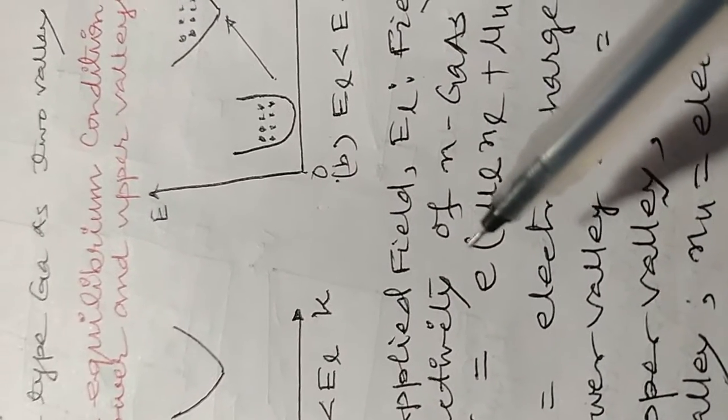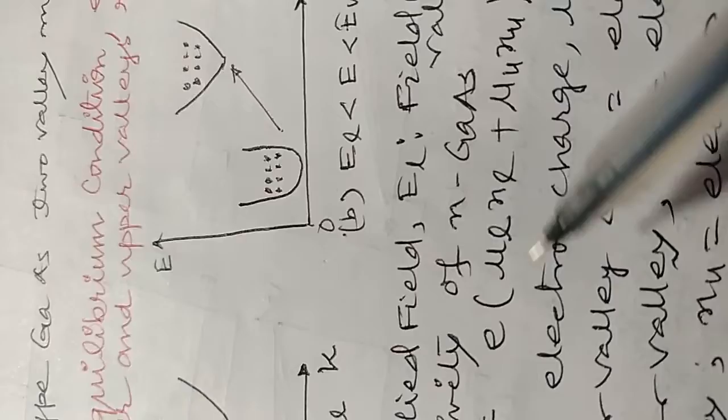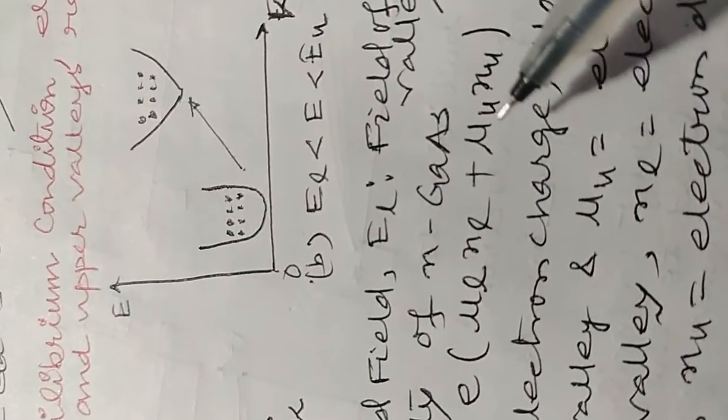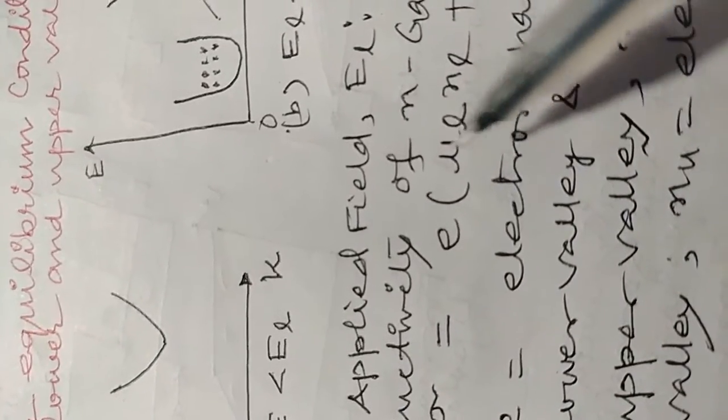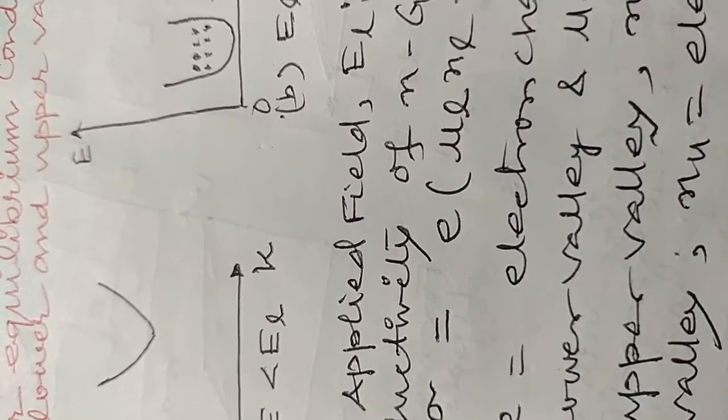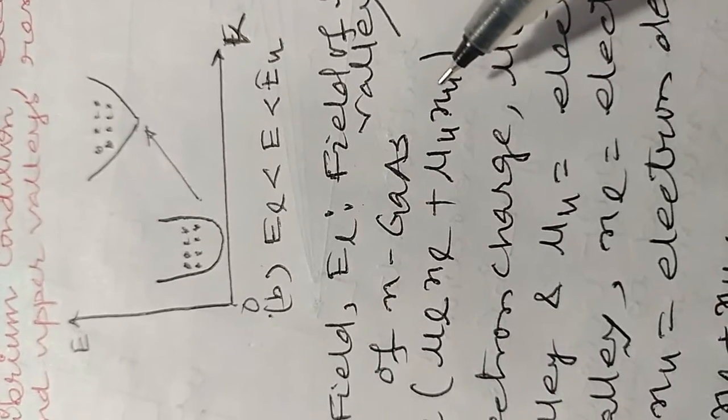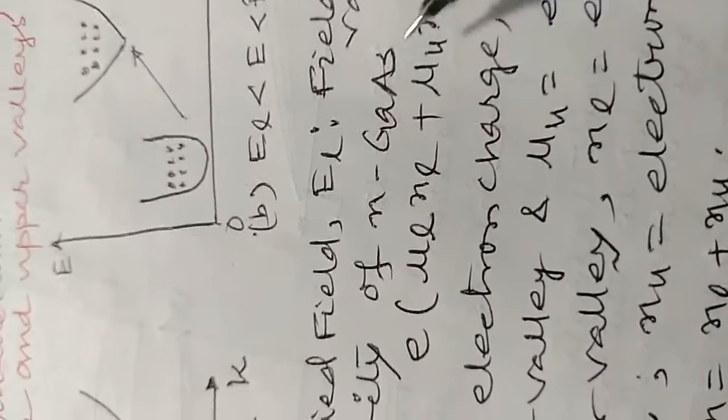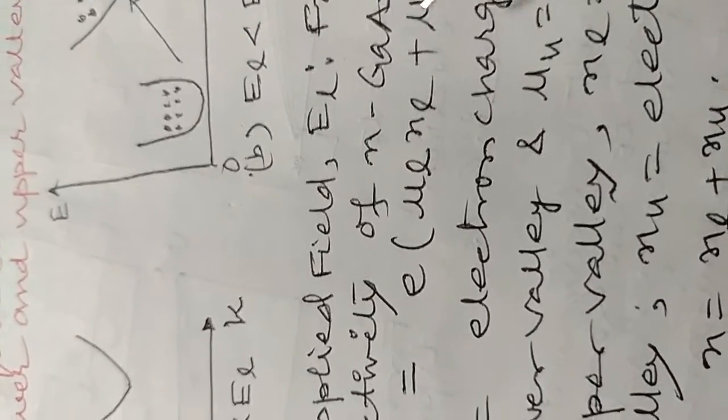Here the conductivity of the semiconductor has been given by conductivity equals E into mu_L N_L plus mu_U N_U, where mu_L is the lower valley mobility, N_L is the charge density of the lower valley, N_U is the upper valley charge density, and mu_U is the upper valley mobility. In this first part, we have seen this much. Thank you.